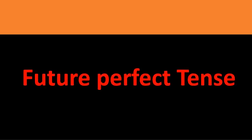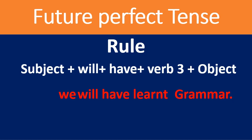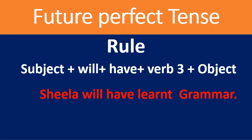Now I take you to future perfect tense. We use future perfect tense to talk about something that will be completed before a specific time in the future — the action will start and be completed at a specific future time. The rule is: subject + will + have + verb in the third form + object. Examples: 'We will have learned grammar.' 'Sheila will have learned grammar.' These are examples of future perfect tense.